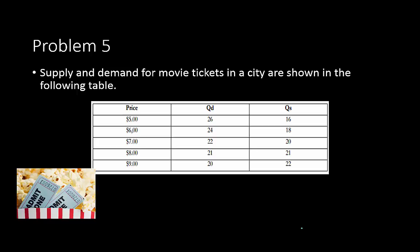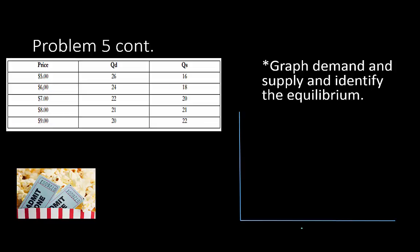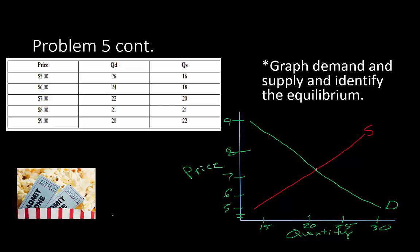Problem 5 covers supply and demand for movie tickets in a city shown in a table. We have to graph demand and supply and identify the equilibrium. The equilibrium should be at a price of $8 and a quantity of 21. So $8 is the equilibrium price and 21 is the equilibrium quantity.